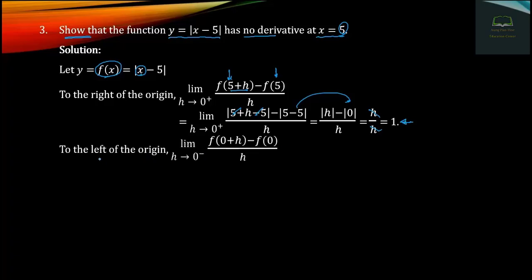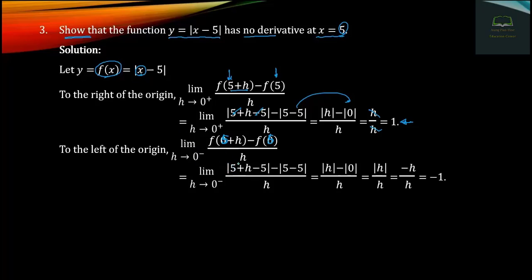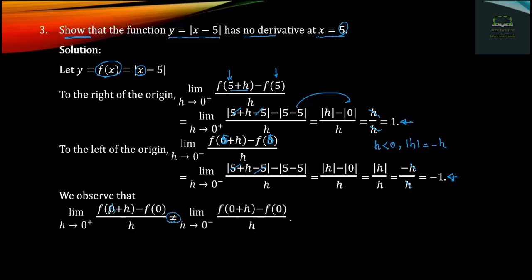For the first part of this formula, let's evaluate the right-hand limit. We get modulus of h divided by h. As h approaches zero from the right, modulus h divided by h equals 1. For the left-hand limit, modulus h divided by h equals minus 1. The right-hand and left-hand limits are not equal, so there is no derivative at x equals 5. Derivative does not exist.